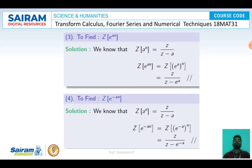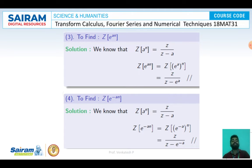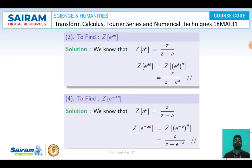Next, for Z{e^(AN)}: since Z{A^N} = Z/(Z-A), we replace A with e^A. So Z{e^(AN)} = Z{(e^A)^N} = Z/(Z - e^A). Similarly, Z{e^(-AN)} = Z/(Z - e^(-A)), by replacing A with e^(-A) in the same formula.